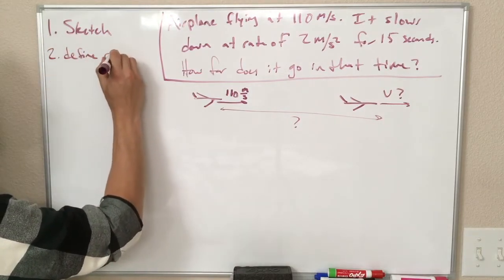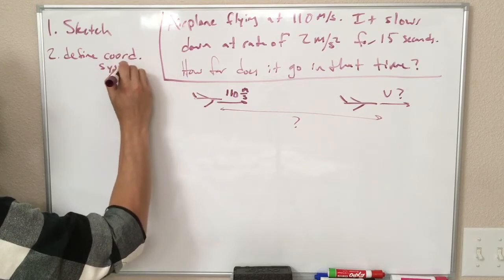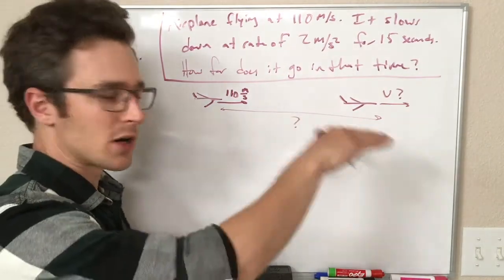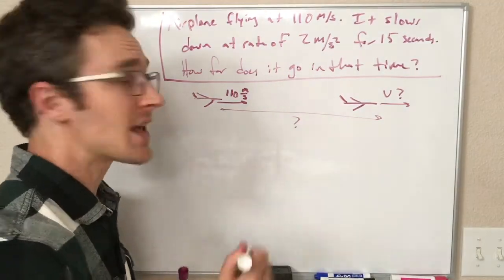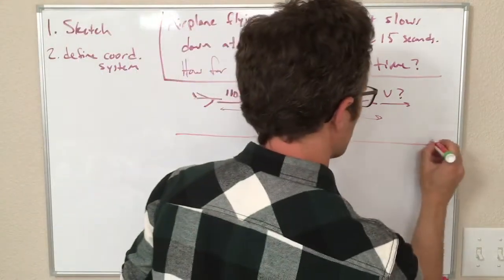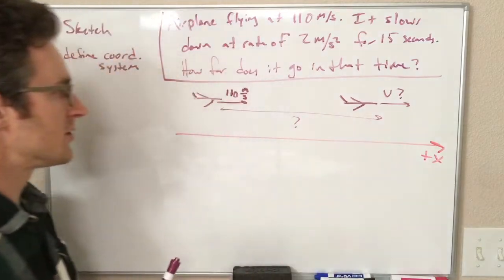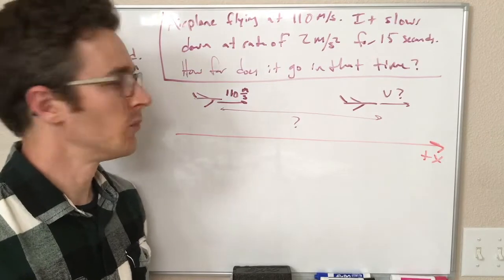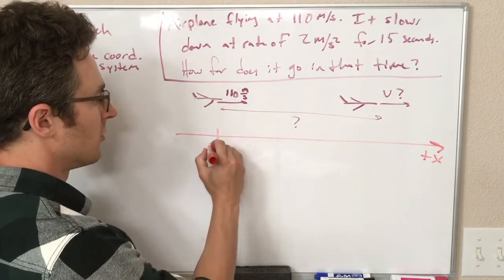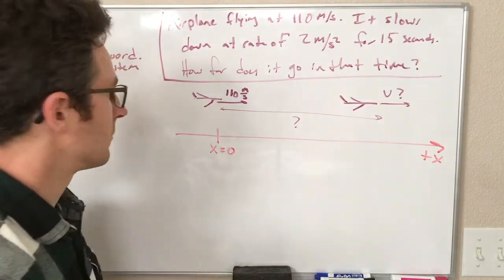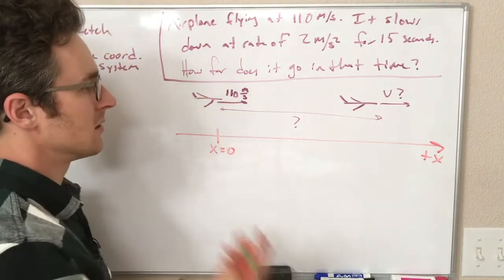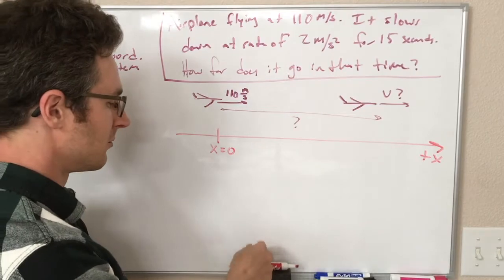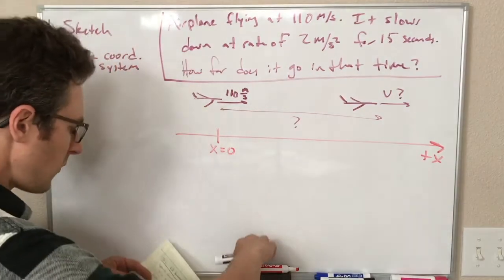So let's move on to step two, which is define our coordinate system. In this case, for 1D kinematic problems, everything's happening in the x direction. So we're going to basically define an x-axis. And to the right is going to be positive, as it often is. And as part of our coordinate system, we can decide what we want to call the origin. And it's going to be easiest if we call this initial position the origin, x equals zero. We don't have to, but hopefully you believe me that that's the easiest choice.